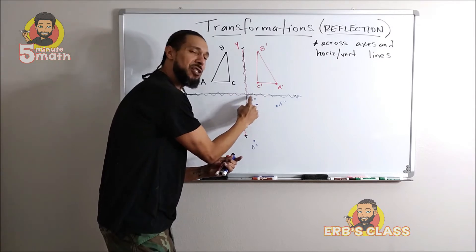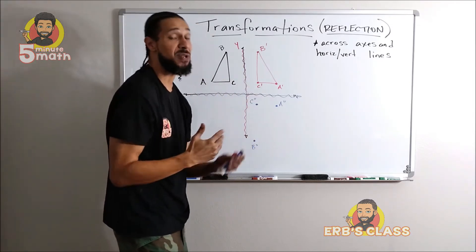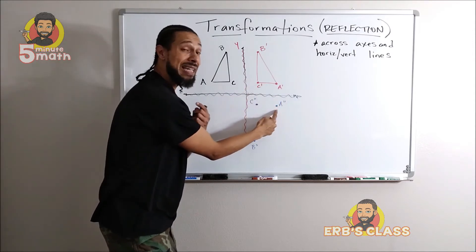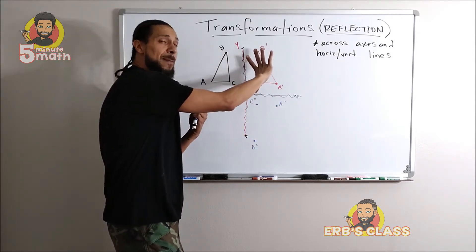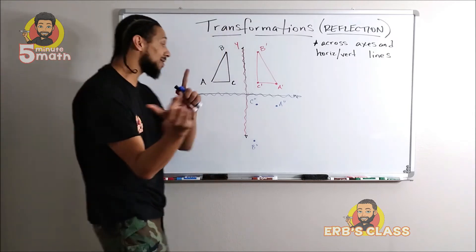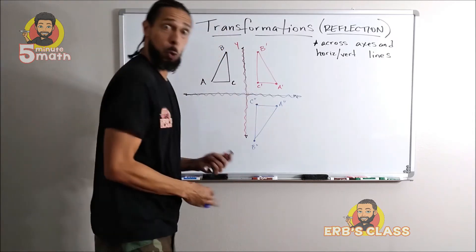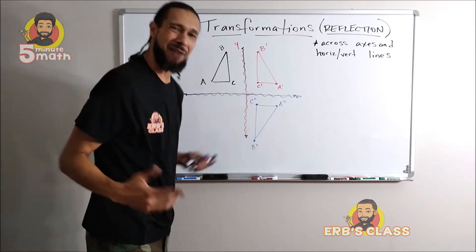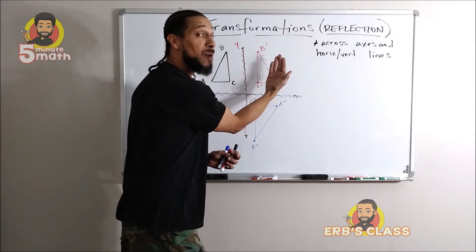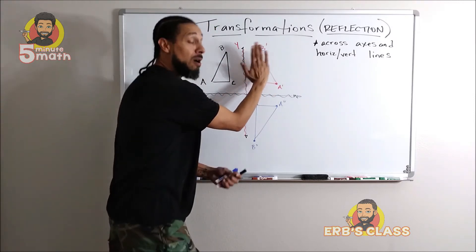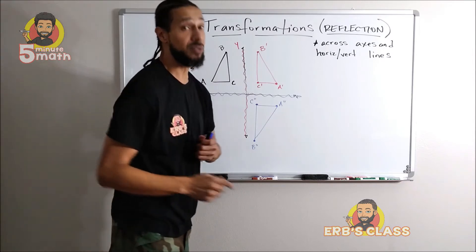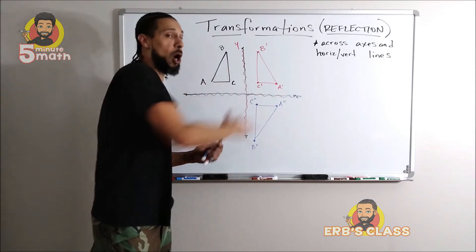When I change or transform C prime it turns into C double prime. Every time you apply another transformation, you add a prime. So A prime got reflected into A double prime. Notice B prime is very far from the mirror, so B double prime when reflected must be that same distance from the mirror. Let's connect the dots. These are two types of reflections: ABC reflects across the y-axis to become A prime B prime C prime, and then reflecting again across the x-axis turns those into double primes.